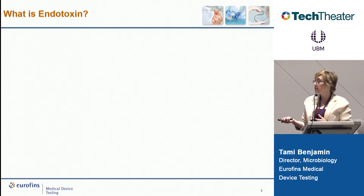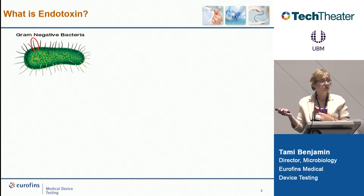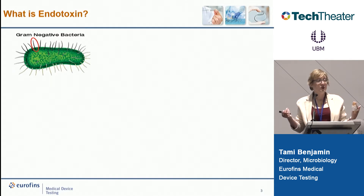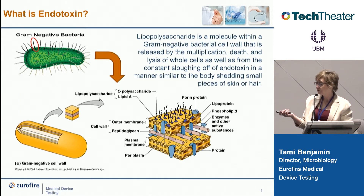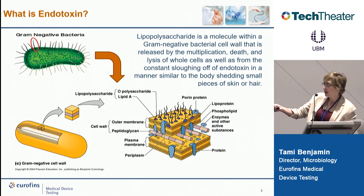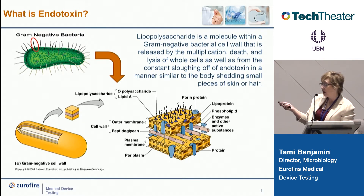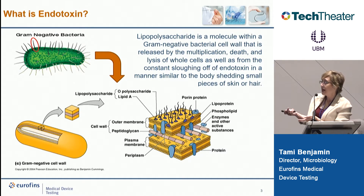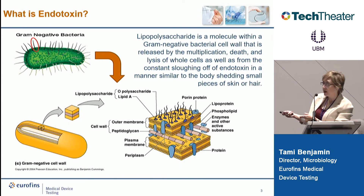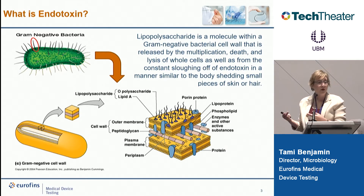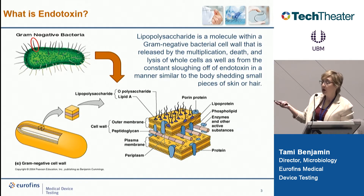First, what is endotoxin? Endotoxin is specific to gram-negative bacteria. In the outer wall of the gram-negative bacteria there is what's called a lipopolysaccharide. That lipopolysaccharide is made up of a peptidoglycan layer, an outer membrane, protein, lipoprotein, and phospholipids. It's the lipopolysaccharide as a molecule that can be released by live gram-negative bacteria, by biofilms made of gram-negative bacteria, or when gram-negative bacteria lyse — when they die. This is what causes endotoxin.